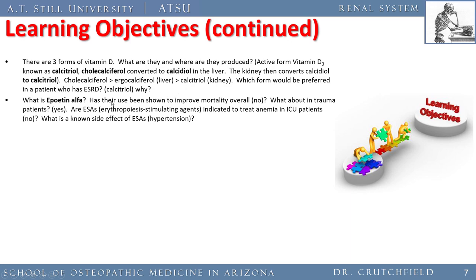If the kidney is failing, it also cannot make erythropoietin. Erythropoietin is a hormone produced by the kidney that helps increase red blood cell production and maintain red cell volume to prevent anemia. The erythropoietin-stimulating agents (ESAs) are not indicated in the ICU to treat acute anemia. A known side effect of ESAs is hypertension — too much blood filling the pump causes elevated blood pressure.